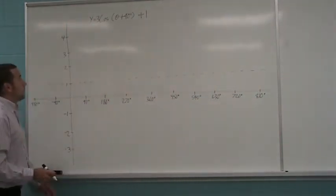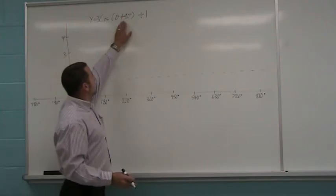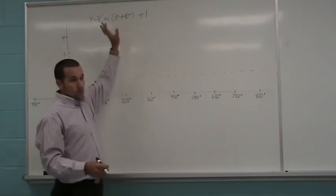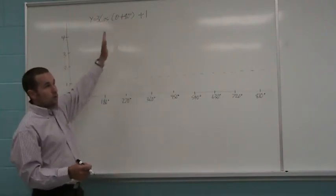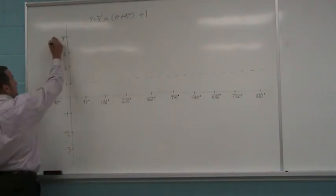Okay, next up, my horizontal shift. It's plus 90 degrees, so it means I've gone 90 degrees to the left. So my wave starts 90 degrees to the left.